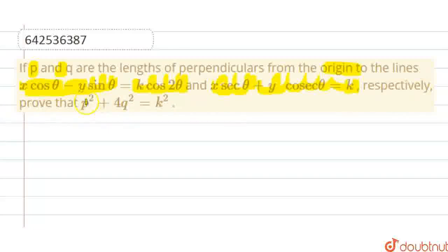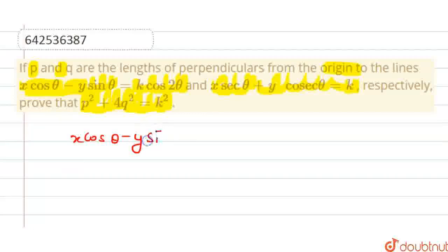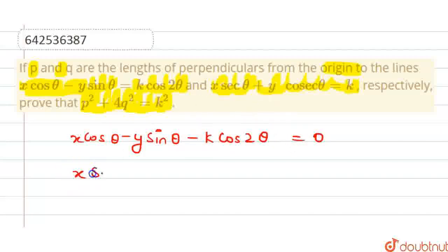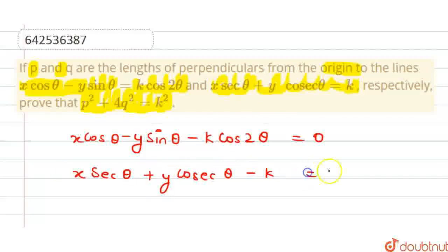Now, we are given two lines. One is x cos θ minus y sin θ minus k cos 2θ equals to 0. And the other one is x sec θ plus y cos θ minus k equals to 0.